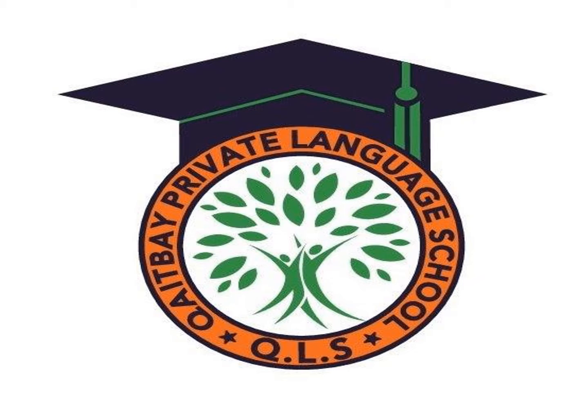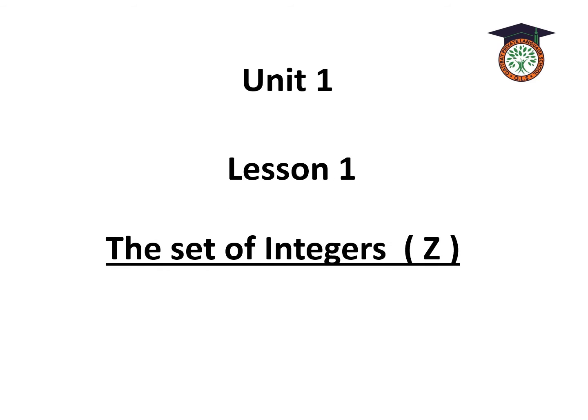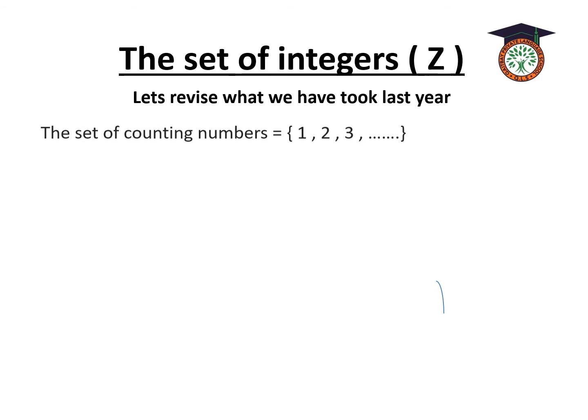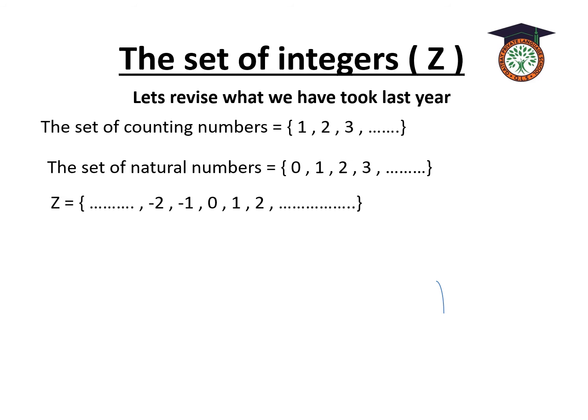Hello dear students. Our unit for today is Unit 1, Lesson 1: The Set of Integers. Let's revise what we have. The set of counting numbers includes 1, 2, 3, and so on. The set of natural numbers are 0, 1, 2, 3, and so on.